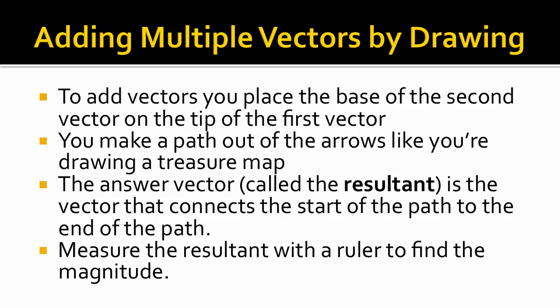To add vectors we do something called the tip to tail method where you put the base of the second vector on the tip of the first vector. It'll look like you've created a path of arrows from the start to the finish, kind of like a treasure map. Our answer vector called the resultant is going to be the straight line from the very start of this path to the very end of the path, like a shortcut.